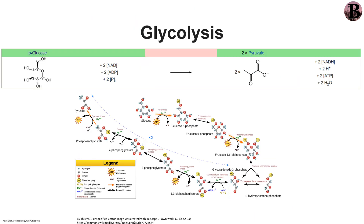Let's start with the first stage, glycolysis, which takes place in the cytosol. Here you can see that during this stage, glucose is split into two molecules of pyruvate.